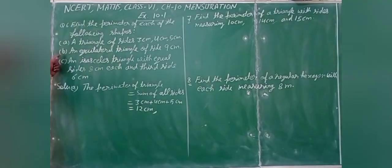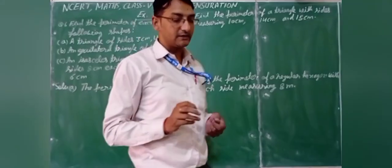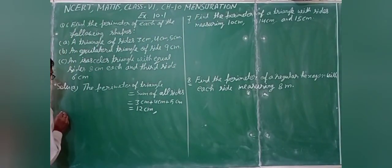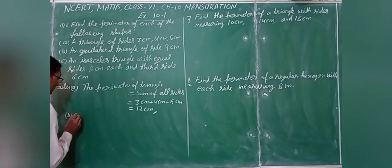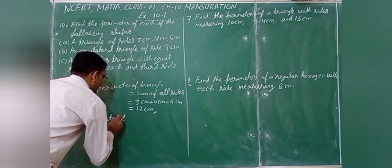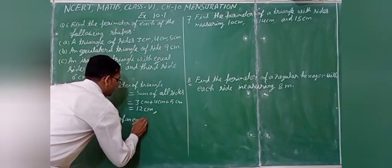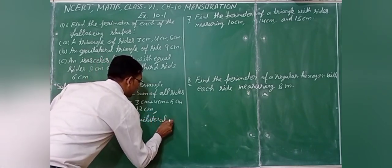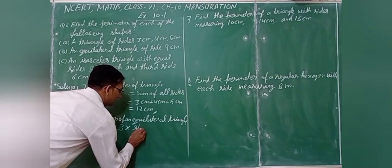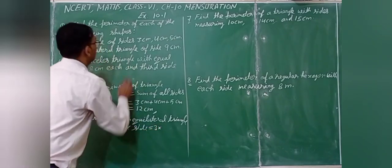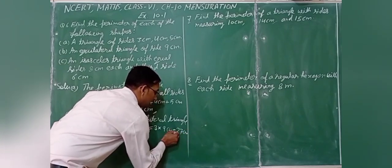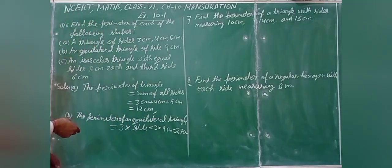Part b: an equilateral triangle with side 9 cm. An equilateral triangle has 3 equal sides. Perimeter = 3 into side = 3 into 9 = 27 cm.